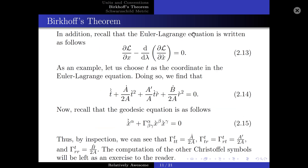In addition, recall that the Euler-Lagrange equation is written as follows. As an example, let us choose t as the coordinate in the Euler-Lagrange equation. Doing so, we find that the Euler-Lagrange equation reduces to a specific form. Recall that the geodesic equation is as follows, and thus by inspection, we can see that gamma-TTT is equal to A-dot over 2A, gamma-TTR equals gamma-TRT is one half of the next component, and gamma-TRR is simply the remaining component. The computation of the other Christoffel symbols will be left as an exercise to the reader, as it is essentially the same process.